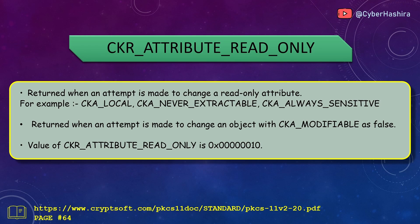CKR_ATTRIBUTE_READ_ONLY is returned when an attempt is made to change a read-only attribute. Examples include CKA_LOCAL, CKA_NEVER_EXTRACTABLE, and CKA_ALWAYS_SENSITIVE. It is also returned when attempting to change an attribute of an object with CKA_MODIFIABLE set as false. The value of CKR_ATTRIBUTE_READ_ONLY is 10 and is on page 64.